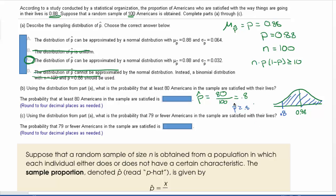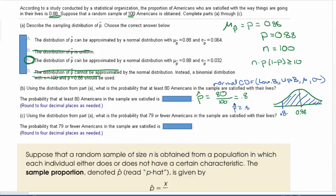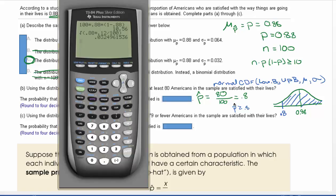To do this, we're going to use our normal CDF. That's within our calculator. This is where we're going to put in a lower bound, an upper bound, a mean, and a standard deviation. Our lower bound is going to be 0.8. Our upper bound, though, we don't have a top number, so we're just going to put in a big number. Let's follow along in our calculator.